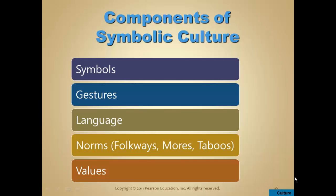Symbolic culture has five different components: symbols, gestures, language, norms, and values. Symbols of a culture in America are all around us — the first one that comes to mind is the American flag.